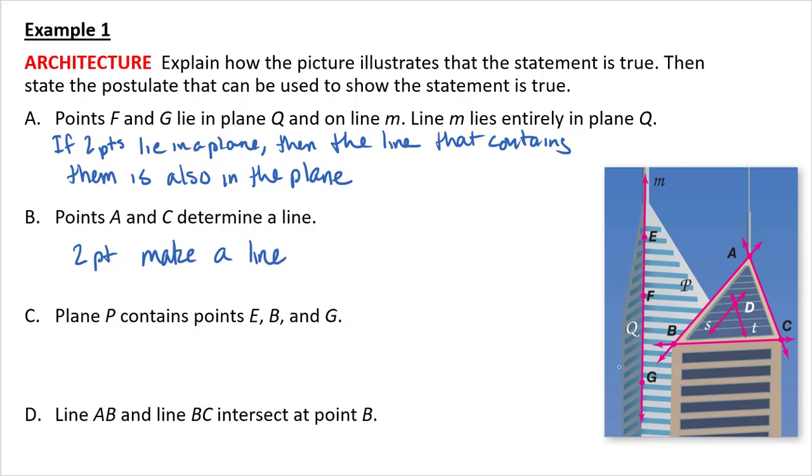Plane P contains points E, B, and G. Now, I kind of disagree with this. I took this out of the book. But three non-collinear. I think there's only one L in collinear. I think I was tired when I was writing this. Points determine a plane.